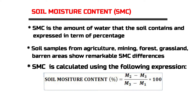To begin with, soil moisture content is the amount of water that the soil contains and is expressed in terms of percentage. Soil from agriculture, mining sites, forest, barren areas, etc. show a remarkable difference in soil moisture content. Soil moisture content of an area is attributed either by the presence or absence of good vegetation cover, organic matter, soil texture, and rainfall receipts.